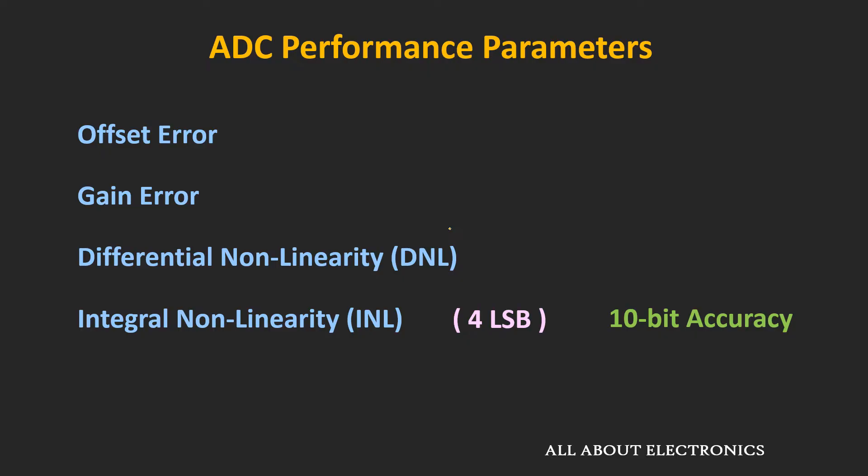So in short, for selecting the ADC for a specific application, you also need to look at all these parameters. In fact, these parameters are the DC errors in the ADC. In this particular video, we will learn about the gain error and the offset error.